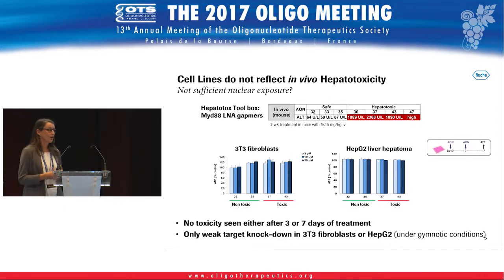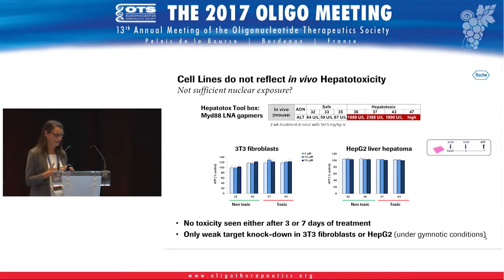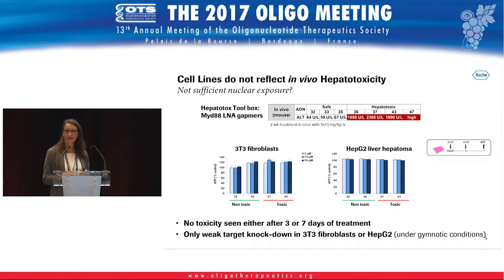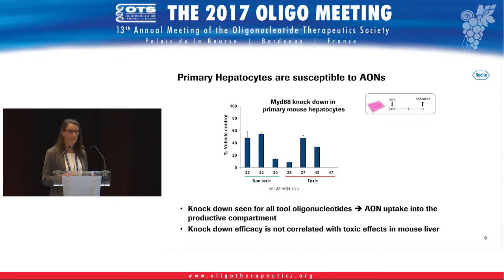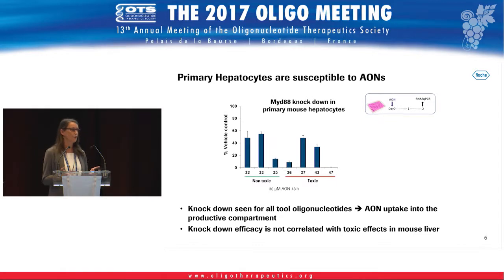When we looked at the knockdown or pharmacological effect of the molecules in those cells we also saw hardly any knockdown of the target, indicating that under unassisted uptake conditions we don't reach the productive compartment with the oligonucleotides. So we went further and wanted to be closer to the in vivo situation and looked into freshly isolated primary mouse hepatocytes. Testing the same set, we looked at knockdown capability to see if these cells take the oligonucleotides up, and we see knockdown for all molecules — certainly to various extents — but it's important to note that knockdown efficacy doesn't go in parallel with toxic effects in the liver.